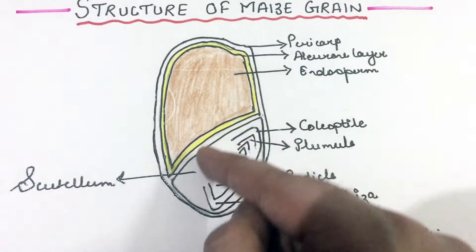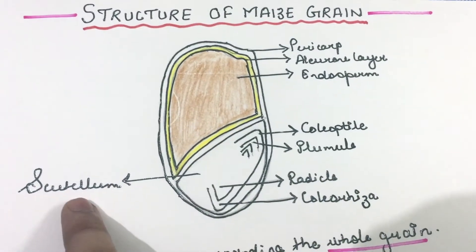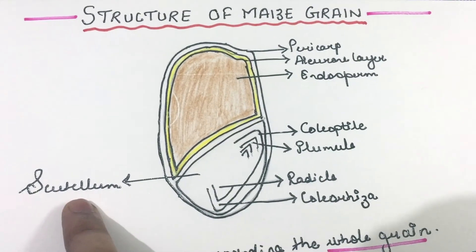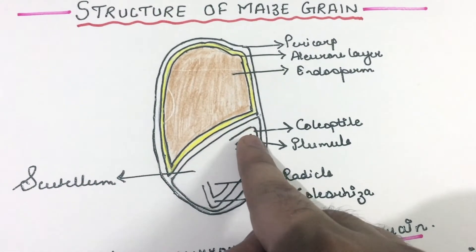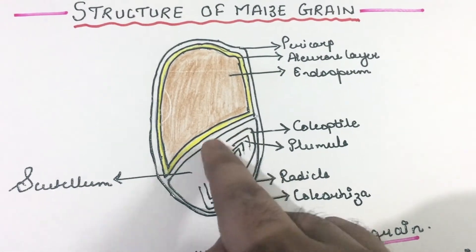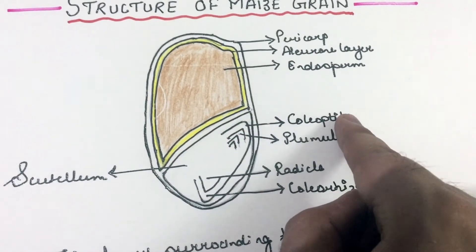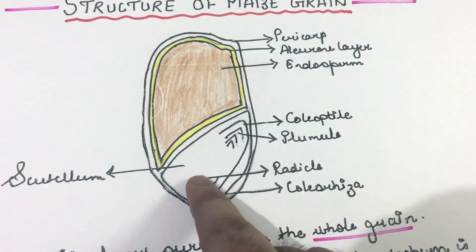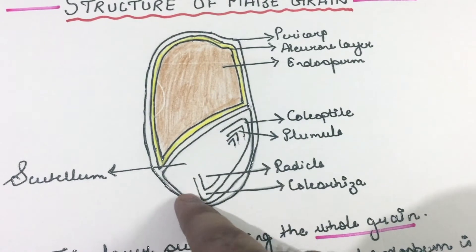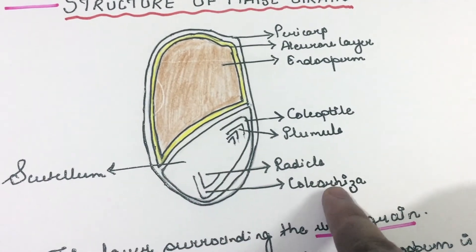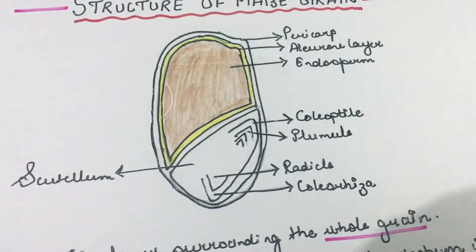On one side of the endosperm lies the scutellum, or the cotyledon. The plumule is covered by a sheath of cells called the coleoptile, and the radicle is covered by a sheath of cells called the coleorhiza.